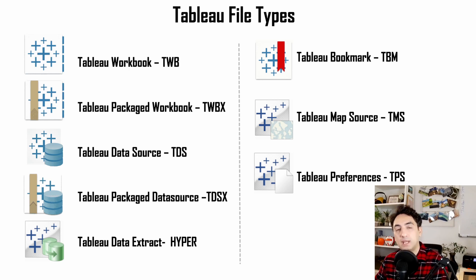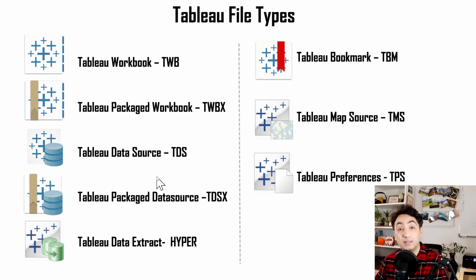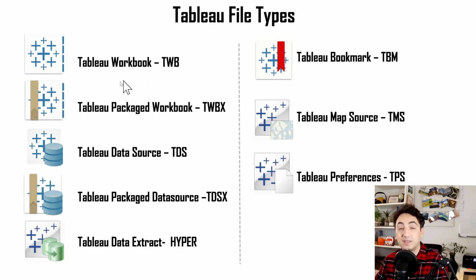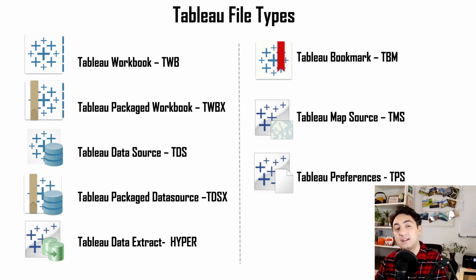In Tableau we have around eight different types of files. I split them into two groups. The left group has around five extensions — they are really important and commonly used in projects. On the right group we have three extensions that are rarely used and not that famous. Before I start explaining those types, I'd like to first explain the process of creating new visualizations and then map those files into this process to make it easier to understand.